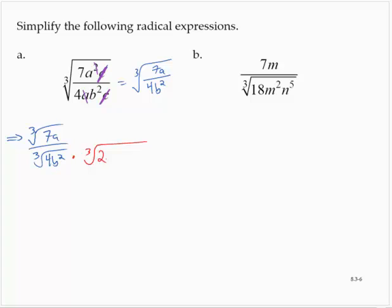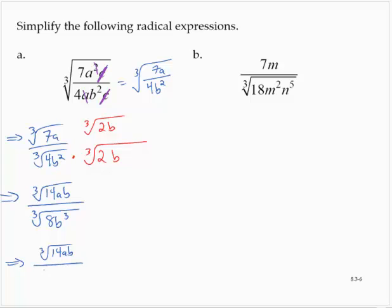b squared times what would give me a perfect cube? Well, b, because that would give me a b cubed. And I'll multiply the numerator by that same quantity. So then that would give me the cube root of 14ab over the cube root of 8b cubed, which is the cube root of 14ab over 2b.